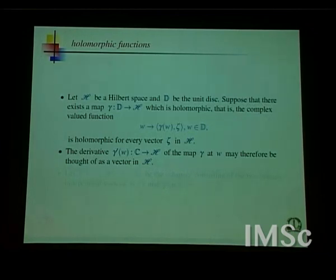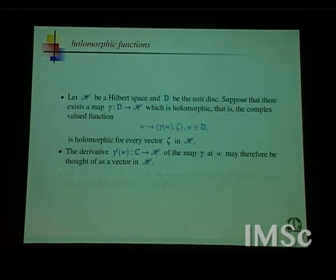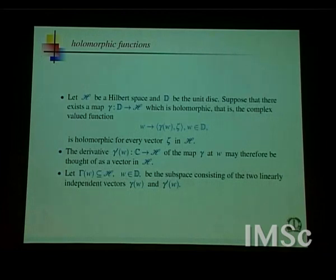So γ′(ω) is really a map from ℂ to H and I can identify that as a vector in H. You might have to make some assumptions about this Hilbert space H. I am typically assuming H itself is a Hilbert space of holomorphic functions. So I have this two-dimensional vector subspace inside the Hilbert space H, and one wonders what you can do with just this very simple two-dimensional vector space.